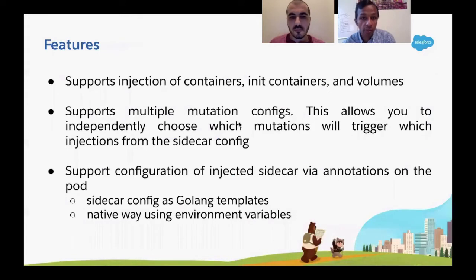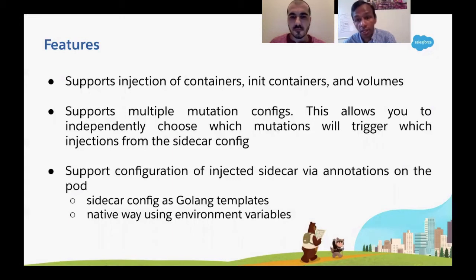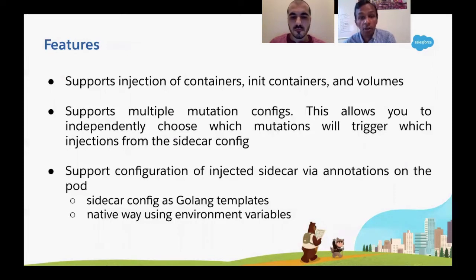In addition to containers, we support init containers and volumes. Supporting multiple mutation configs allows you to independently choose which mutation triggers which injection. One interesting feature of the generic sidecar injector is that it not only supports sidecar configuration using environment variables in the native way, but it also allows you to specify sidecar configuration using Golang templates. Hayk will show you a demo of how that actually works.